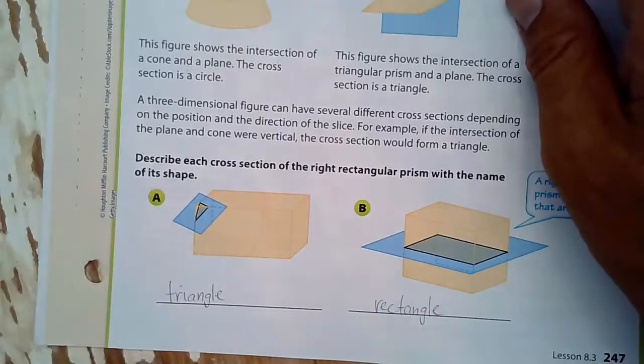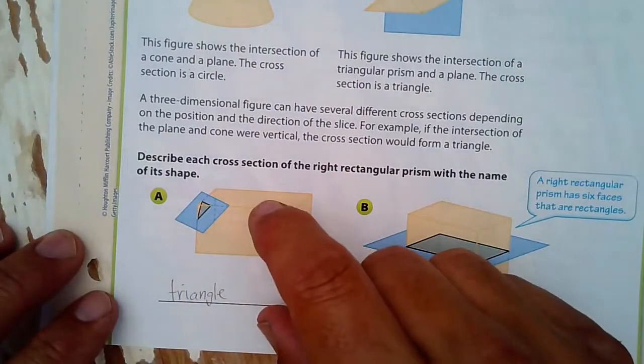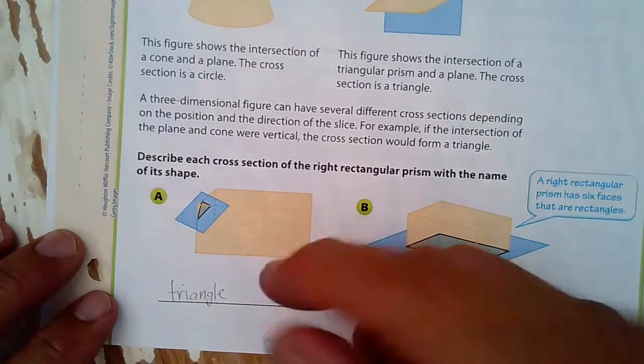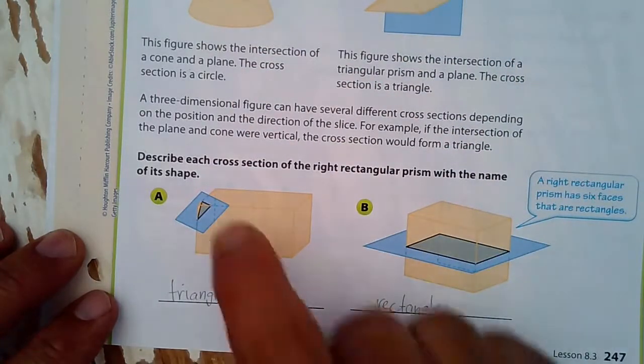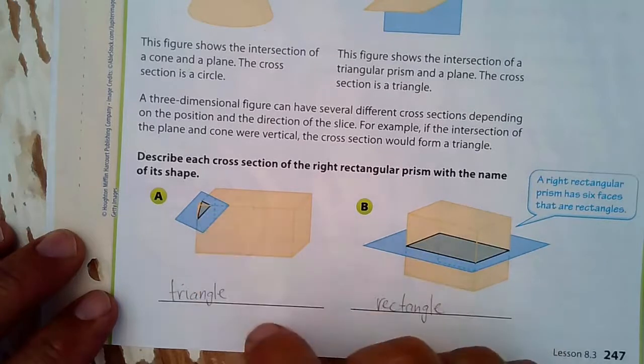Here, describe the cross-section. So you have this three-dimensional shape, this rectangular prism, and the slice is there. What is the shape of the cross-section? It is that outline triangle right there.